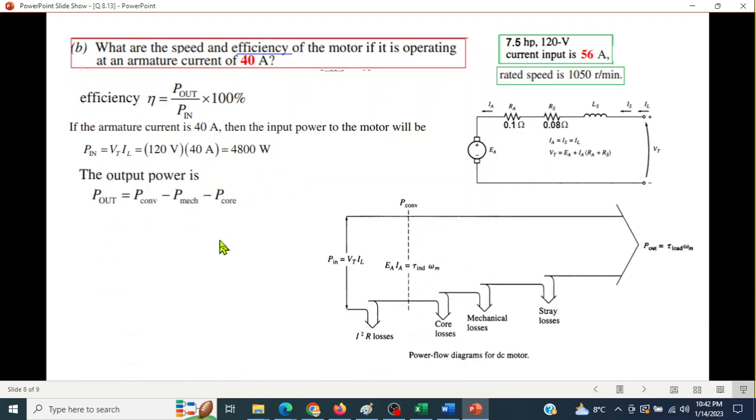Now output power. We'll use the power flow diagram. This diagram: this is P_in, this point is called P_converted, and we can calculate P_converted from this formula, EA times I_a, and this is our output. We can write from here that P_out will be P_converted minus these losses, so minus P_mechanical and minus P_core. Since stray loss is not given, therefore this is neglected.